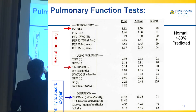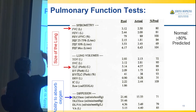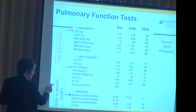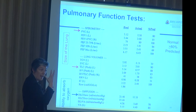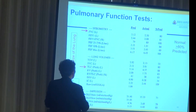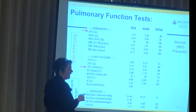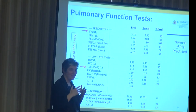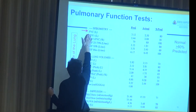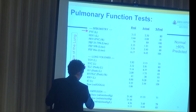The first two tests — spirometry and lung volumes — measure the size of the lungs. The third test — diffusion — measures the ability to absorb oxygen from the air. When you look at these tests, there are a lot of numbers. The key numbers to look at are your FVC, your total lung capacity, and your diffusion capacity — DLCO. For each of these, you'll see an actual measurement next to a predicted value based on your age, height, gender, and race.